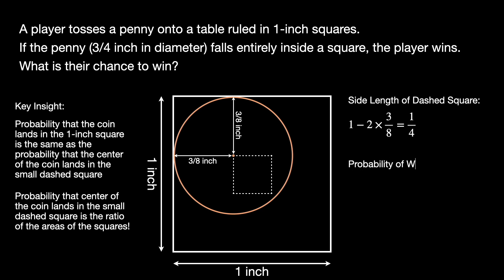Finally, we find that the probability of winning is 1 fourth squared, which is the area of the small dashed square, divided by 1, which is the area of the larger 1 inch square. This gives us 1 by 16.